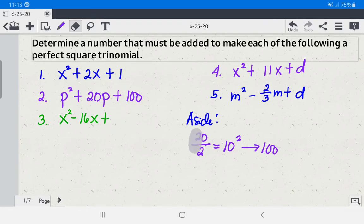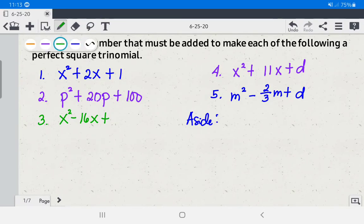Next, number 3. We have x squared minus 16x. The numerical coefficient of the middle term is negative 16. We have negative 16 divided by 2 equals negative 8. Then you square it. That is 64, because negative 8 times negative 8 equals 64. So 64 must be added to this expression to make this a perfect square trinomial.